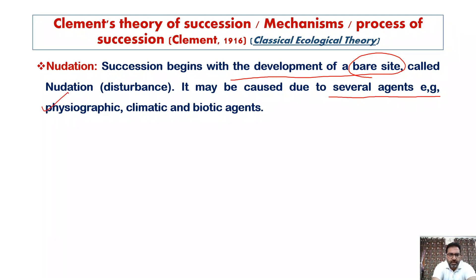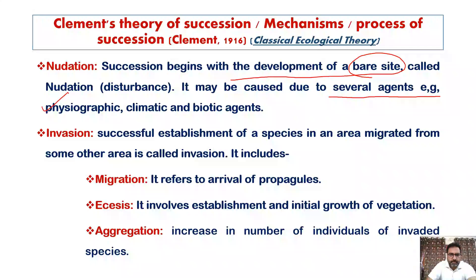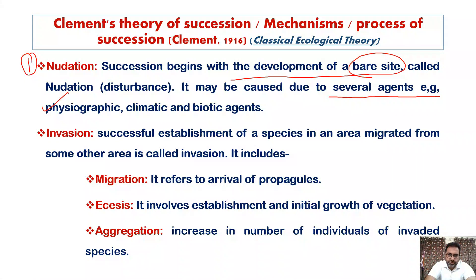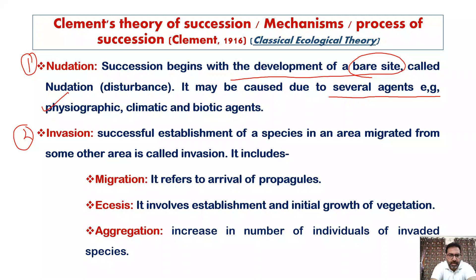This nudation may be caused due to several agents. Those agents may be physiographic, they may be climatic, or they may be biotic agents. This is the first process in the general mechanism of succession. The first and foremost thing is nudation. Then the second step is invasion — that is, the successful establishment of species in an area migrated from some other area.